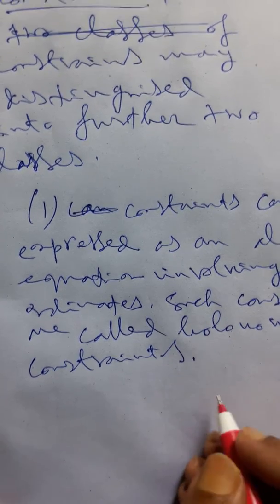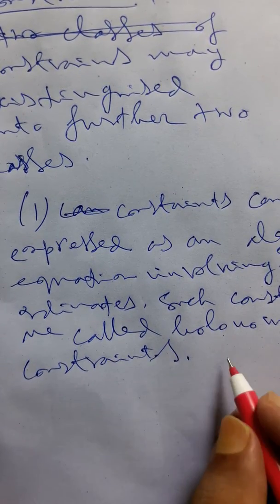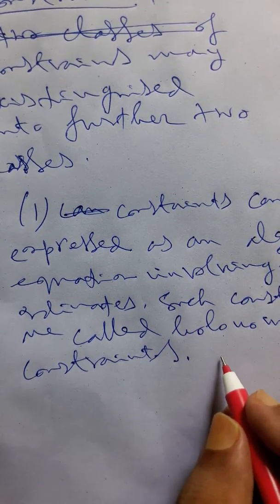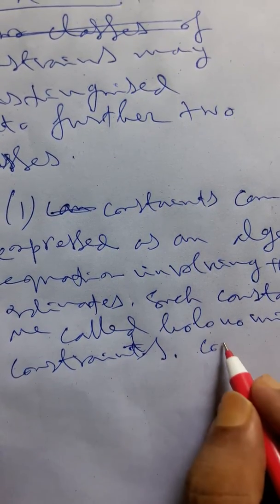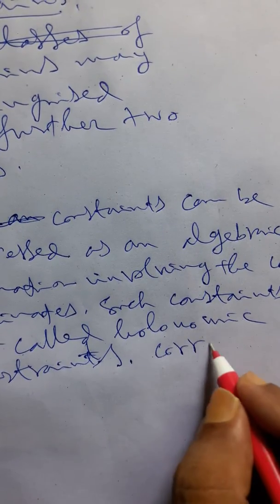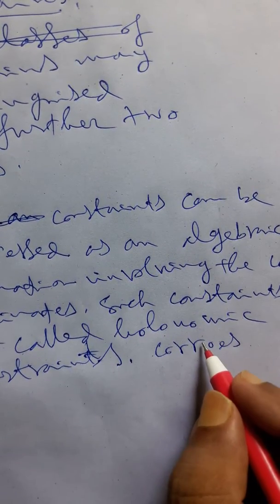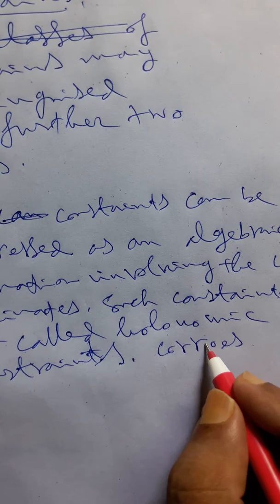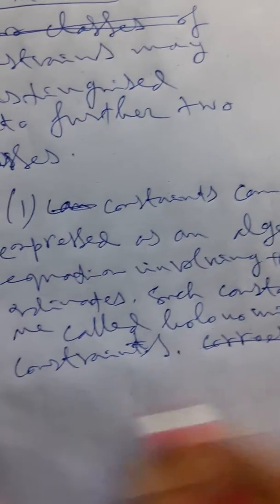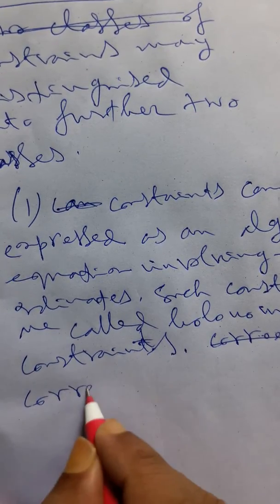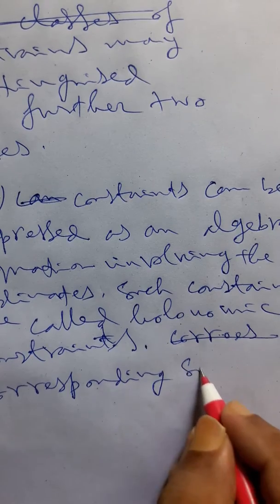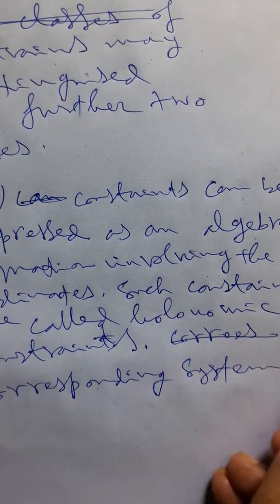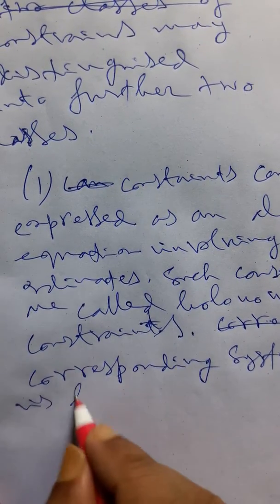And the corresponding system is called holonomic system. We find from holonomic constants the corresponding system. It is holonomic constants.